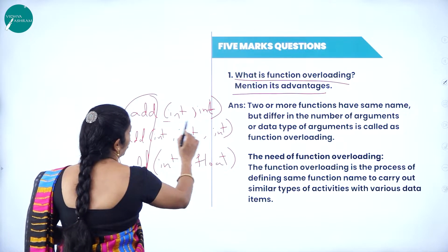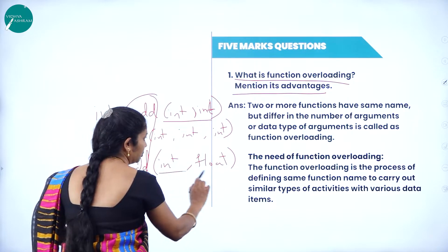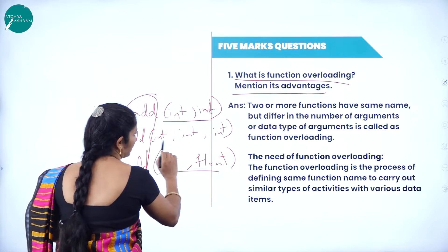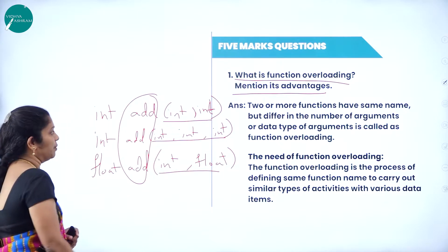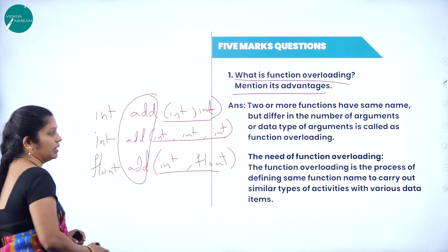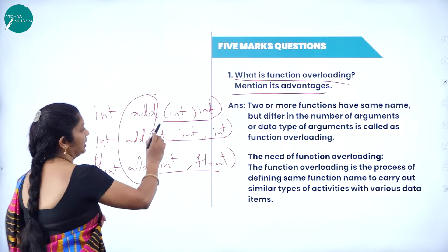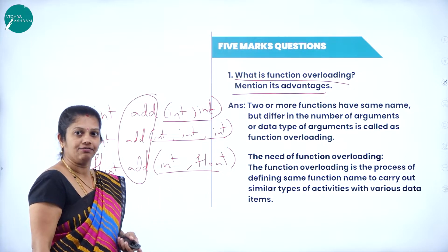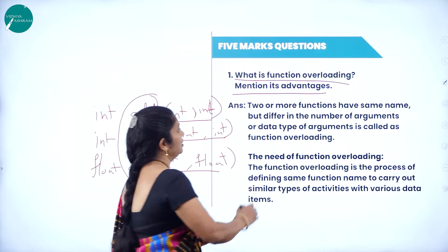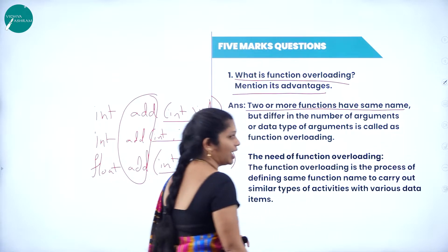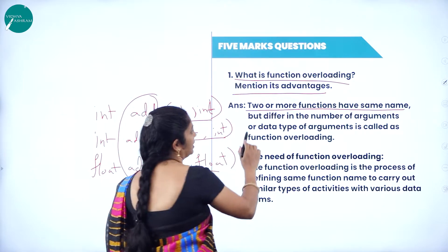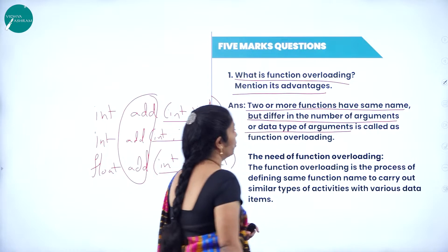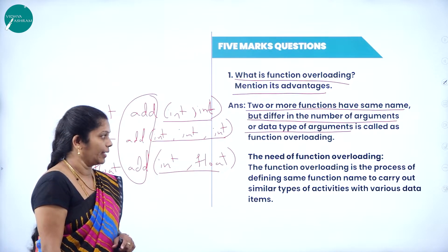But what is the difference? Here we have two arguments, here also we have two, but here both are integer, here one int and one float. Here we have two integer variables, but here we have three integer variables. It means that function overloading means two or more functions have the same name but differ in number of arguments or data type of the argument.